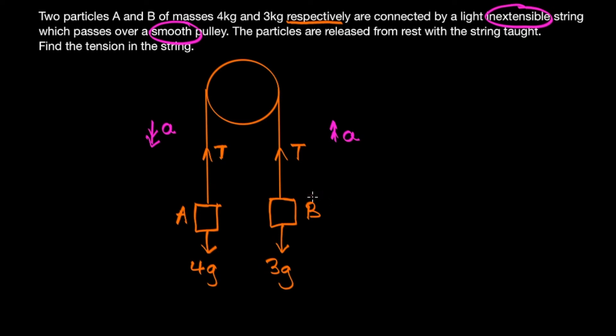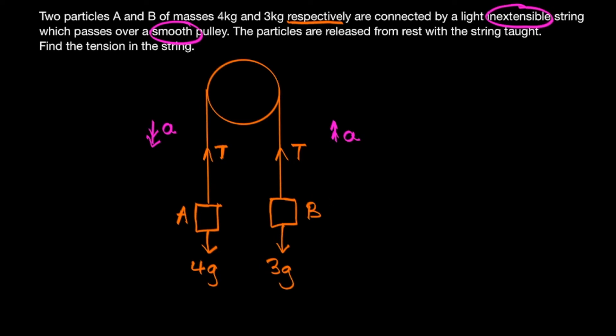So now we can go ahead and use F equals ma on our two particles separately. So if we first resolve the forces of A, we have a weight of 4g and a tension opposing it up here which we don't know yet. But because we know that A is going to be accelerating downwards, we know that 4g is greater than T.